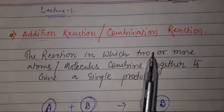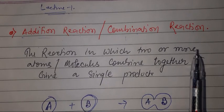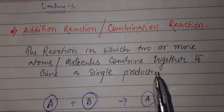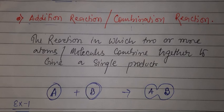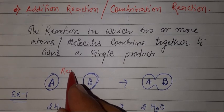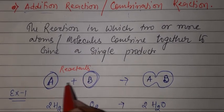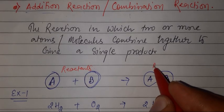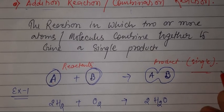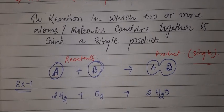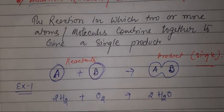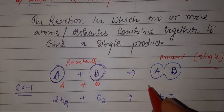The reaction in which two or more atoms or molecules combine together to give a single product. The two reactants combine and generate a product, a single product. This is a combination reaction because they combine to give a single product. A and B combine to give AB.